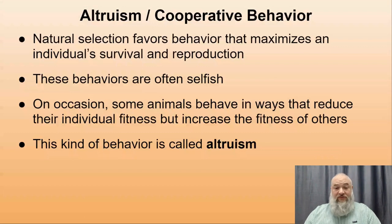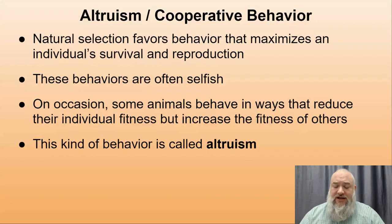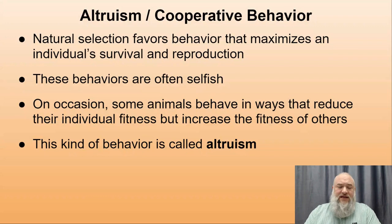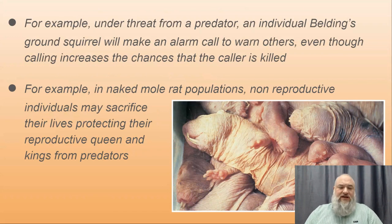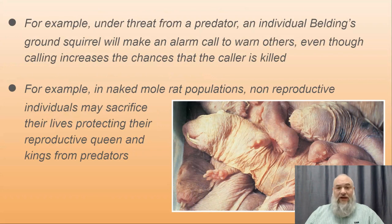Natural selection favors behavior that maximizes individual survival and reproduction — behaviors are often selfish. But some animals behave altruistically, reducing their own fitness to increase others'. Certain ground squirrels make alarm calls to warn others when threatened by a predator, even though calling makes the caller easier for the predator to locate. It doesn't help the individual caller but helps all surrounding squirrels escape.